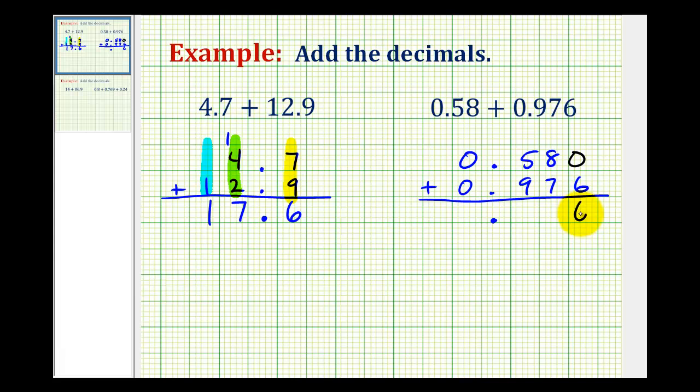Zero plus six is six. Eight plus seven is fifteen, so we carry a one. One plus five plus nine would be fifteen, so we carry a one. Our sum is 1.556 or one and five hundred fifty-six thousandths.